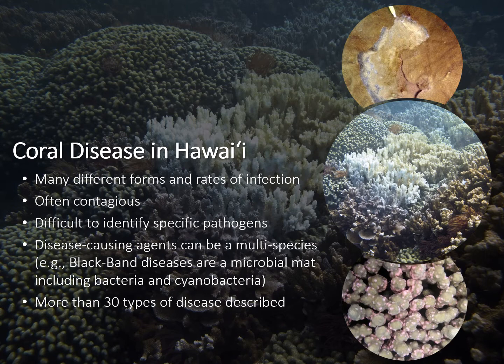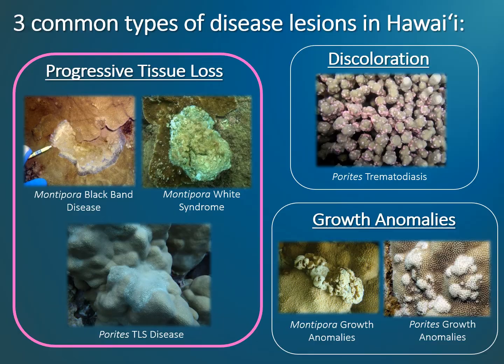For example, Montipora Black Band disease, seen in the upper right image, emerges as a microbial mat including multiple types of bacteria and photosynthetic cyanobacteria. Today there are more than 30 types of coral diseases recognized globally. For this training course and for the Eyes of the Reef reporting, you will only need to be able to recognize three types of disease lesions: discoloration diseases, growth anomalies, and progressive tissue loss diseases.